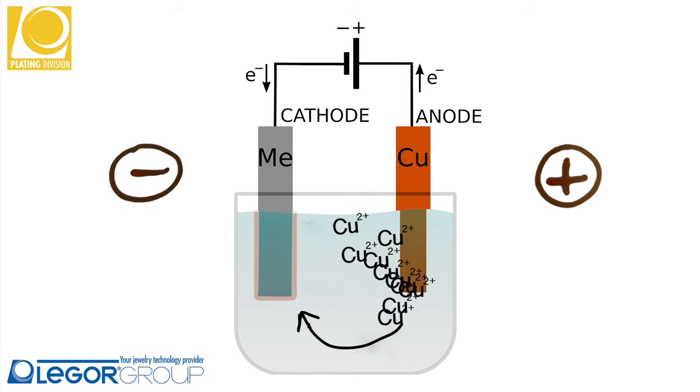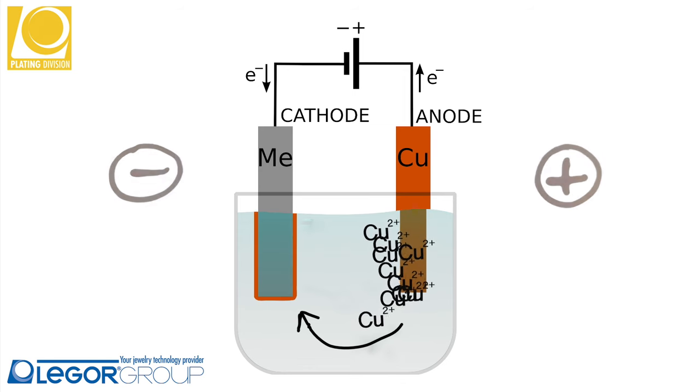The metallic ions with the positive charge are attracted from the negative pole and become metallic particles attached on the surface of the object.